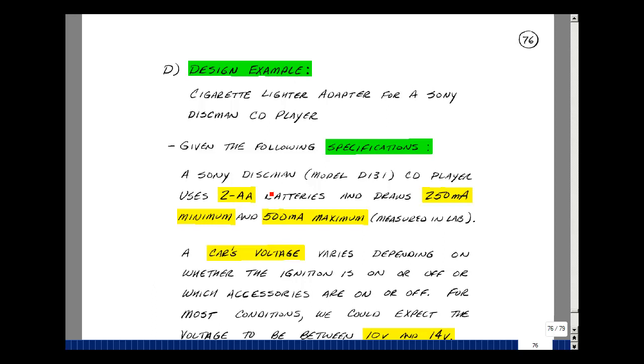I took a Sony Discman player. It used two AA batteries. I wanted to design a power supply to basically replace these two AA batteries. I took some measurements on the CD player and I found that when it was playing music, it was drawing about a quarter of an amp. It was 250 milliamps.